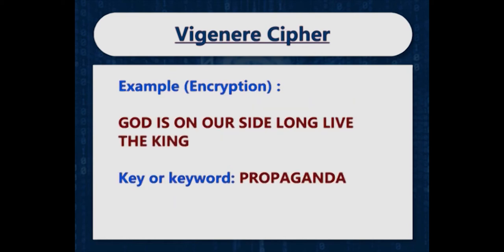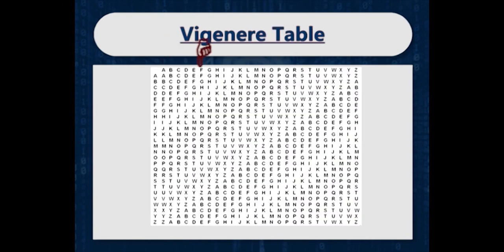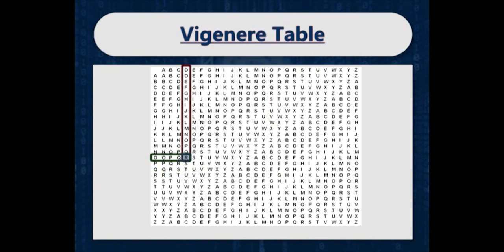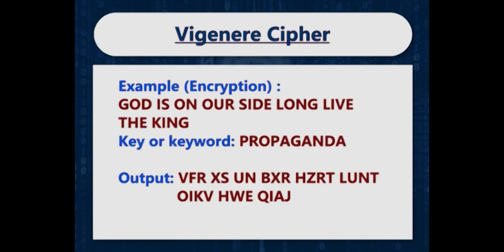For example, the first plaintext alphabet G intersected with keyword alphabet P gives P. The next plaintext character O intersected with keyword character R gives F. Plaintext D intersected with keyword character O gives R. Continuing this intersection procedure for all other characters, we get V, F, R, X, S, U, N, B, X, R, H, Z, R, T, L, U, N, T, O, I, K, V as the output for plaintext 'God is on our side, long live the king'.